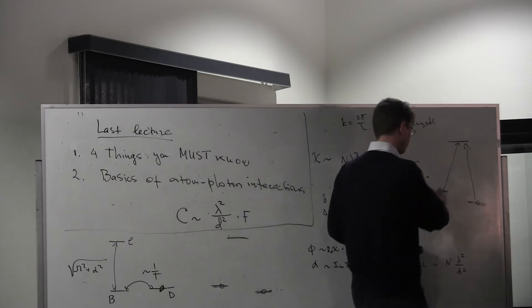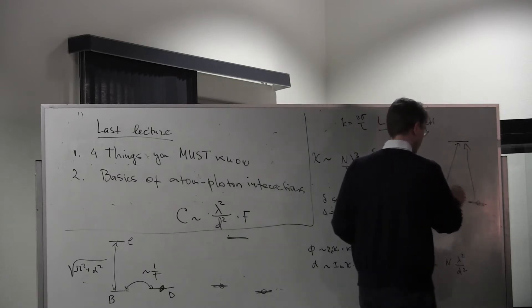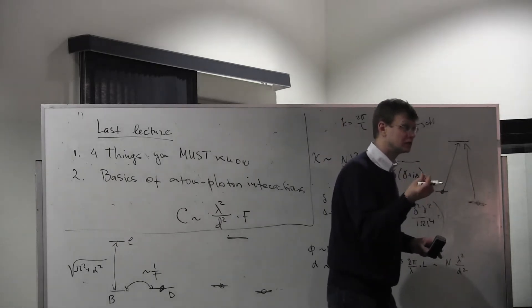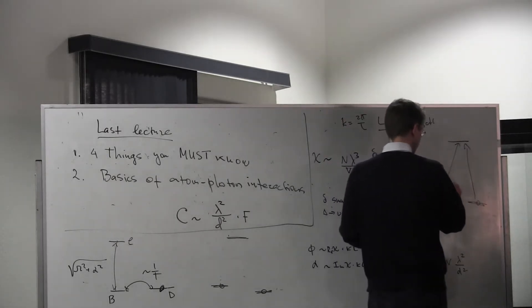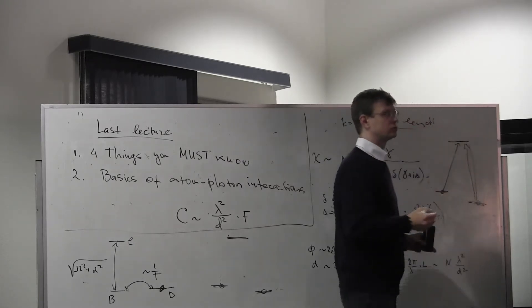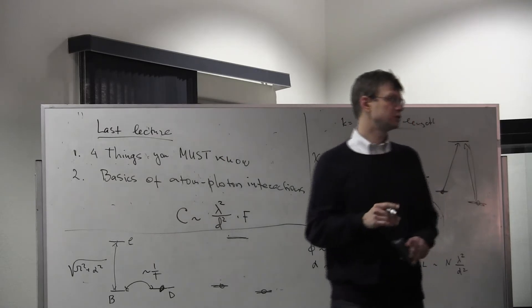And if I prepare my superposition with proper kind of weights and proper signs, proper phases, I could arrange a condition such that when I add this path plus this path, the result is exactly zero. So that's interference.